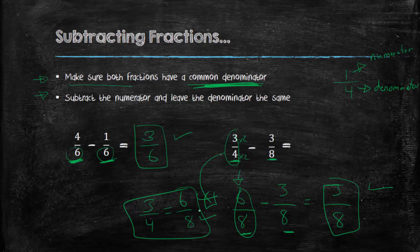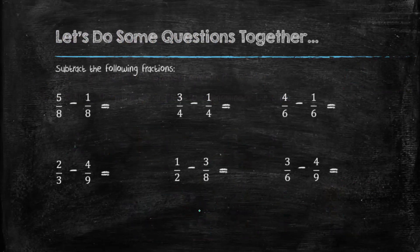So they're equivalent fractions. I have a couple of questions to practice, so let's do some questions together and see if we can really solidify our knowledge here. So let's look at this. 5 over 8 minus 1 over 8. Are the denominators the same? Yes. So we just subtract the numerators. 5 minus 1 is 4 over 8.